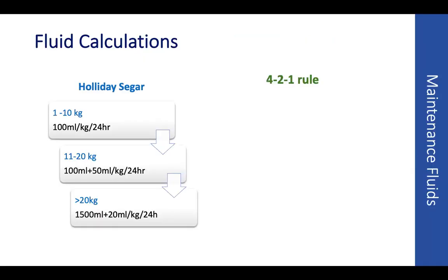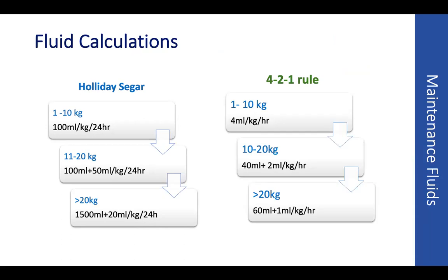Now, having selected the fluid, how much to give? Classically we used the Holliday-Segar method, but this is no more used, because you don't want to prescribe maintenance fluid for 24 hours — instead for as short a duration as possible. It is mandatory to reassess the child at least 6-hourly. The 4-2-1 rule is what we commonly use: for the first 10 kg, it is 4 ml per kg per hour; for the next 10 kg, add 2 ml per kg per hour; for any weight above 20 kg, it is 60 ml plus 1 ml per kg per hour. So a 20 kg child requires 60 ml per hour. This is an hourly prescription, not a daily one.